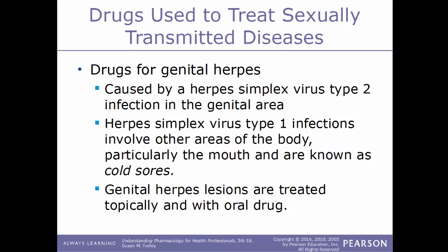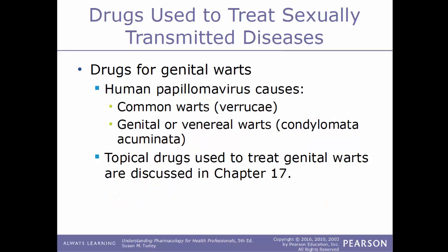Genital herpes is caused by herpes simplex virus 2, which causes infection in the genital area, while herpes simplex 1 causes infections in other parts of the body — particularly the mouth — known as cold sores. Genital herpes lesions are treated both topically and with an oral drug. Genital warts are caused by HPV, human papillomavirus — the same virus that causes common warts and venereal warts. Topical drugs used to treat genital warts will be discussed in more detail in a future video on chapter number 17.